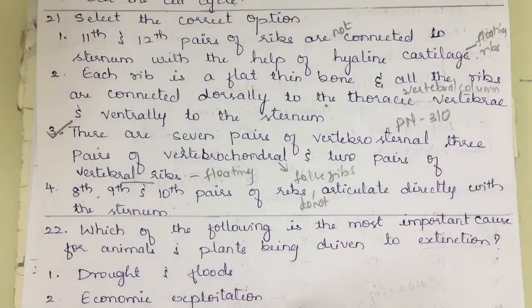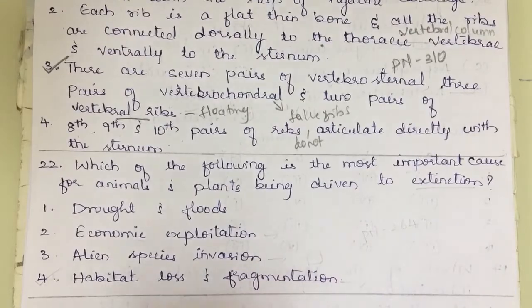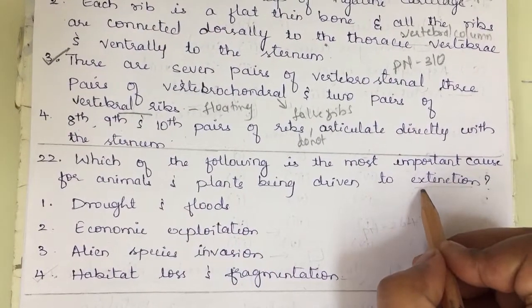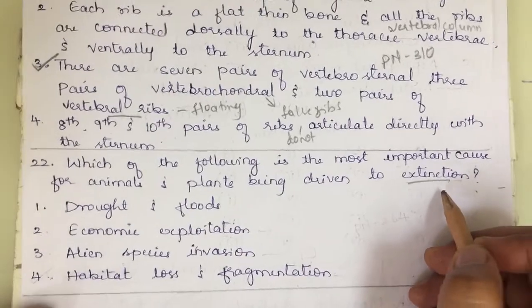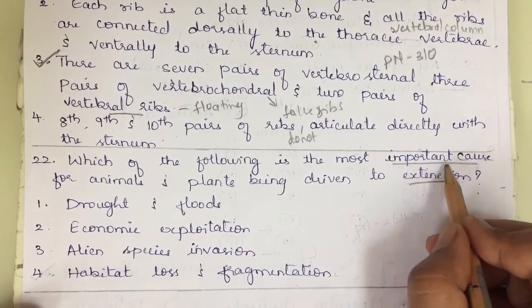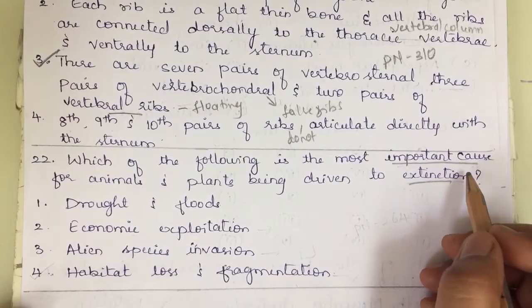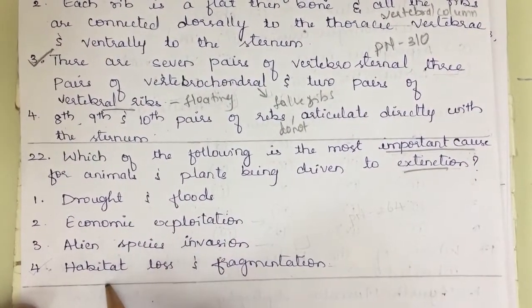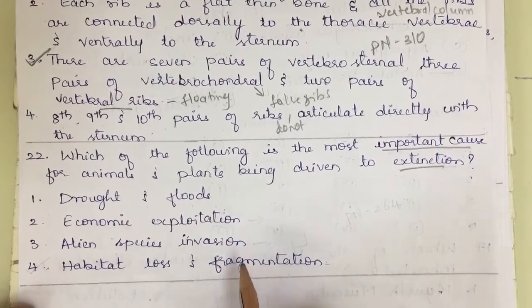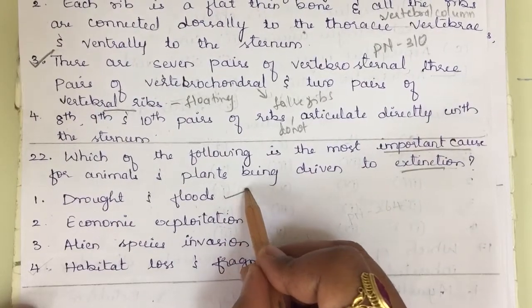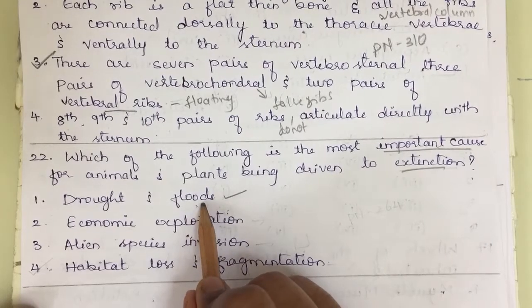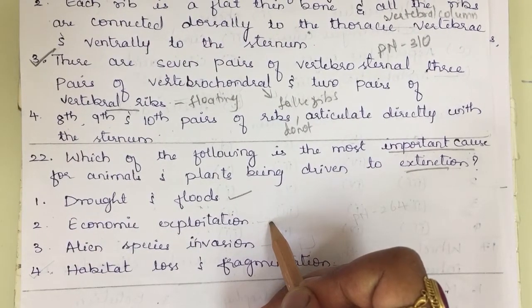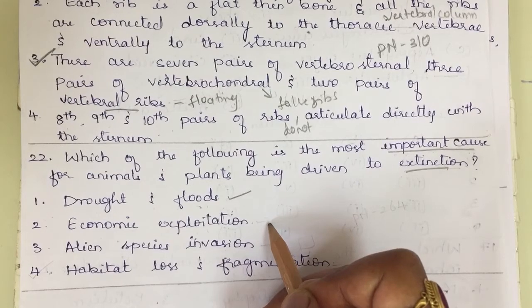Question 22: Which of the following is the most important cause for animals and plants being driven to extinction? The options are drought and floods, economic exploitation, alien species invasion, and habitat loss and fragmentation. Drought and floods can cause extinction. Economic exploitation — meaning gain or profit through production, distribution, and consumption of goods — is not directly related to extinction.